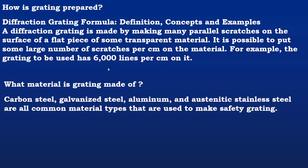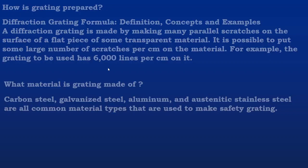Carbon steel, galvanized steel, aluminum, and austenitic stainless steel are common material types that are used to make safety grating. And it is also used for surgical purposes.